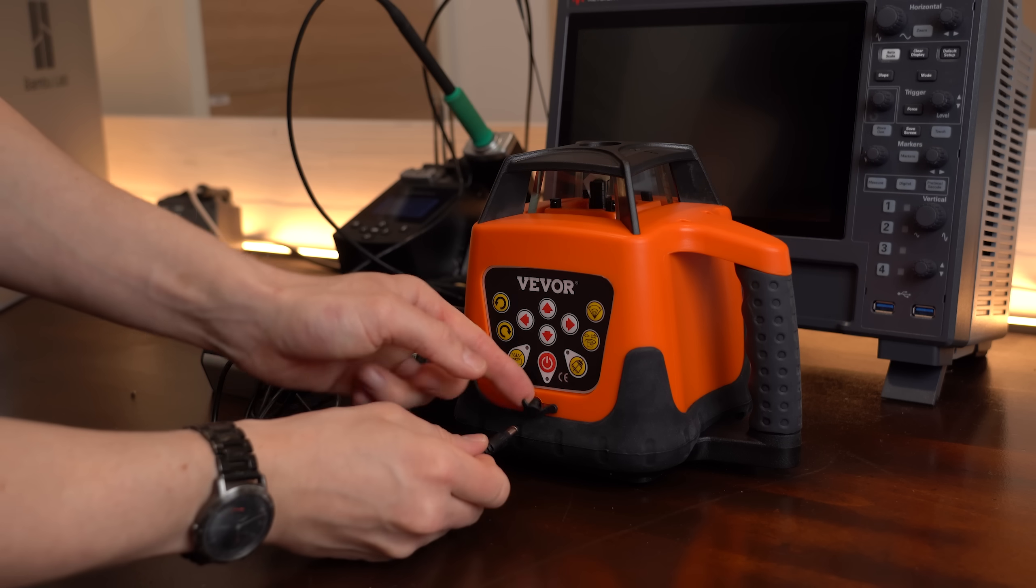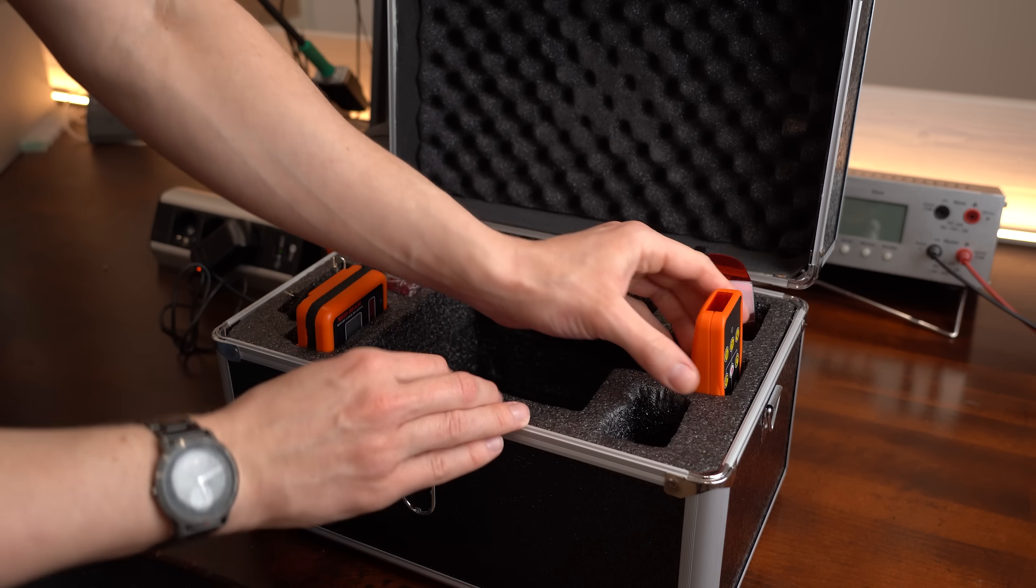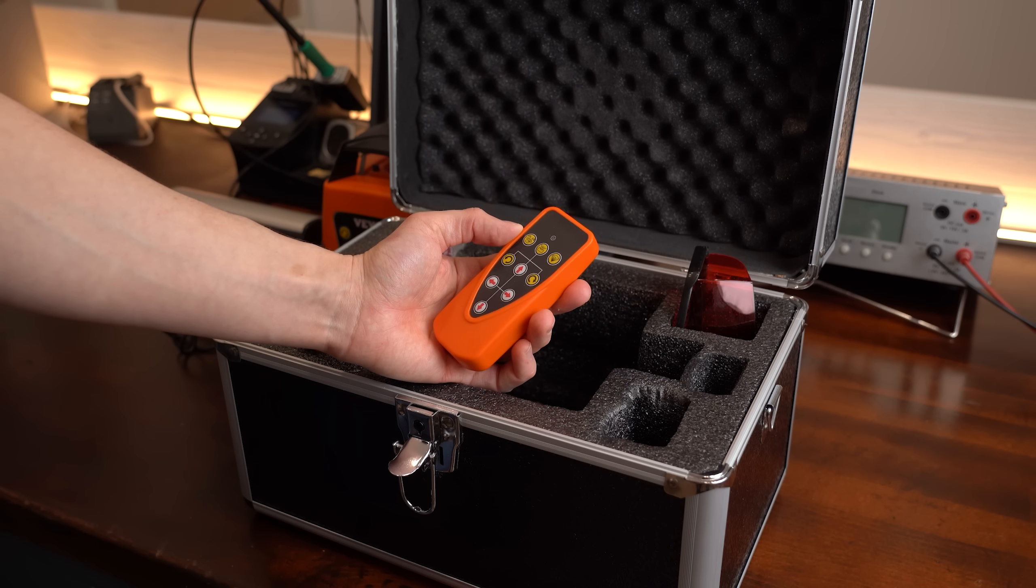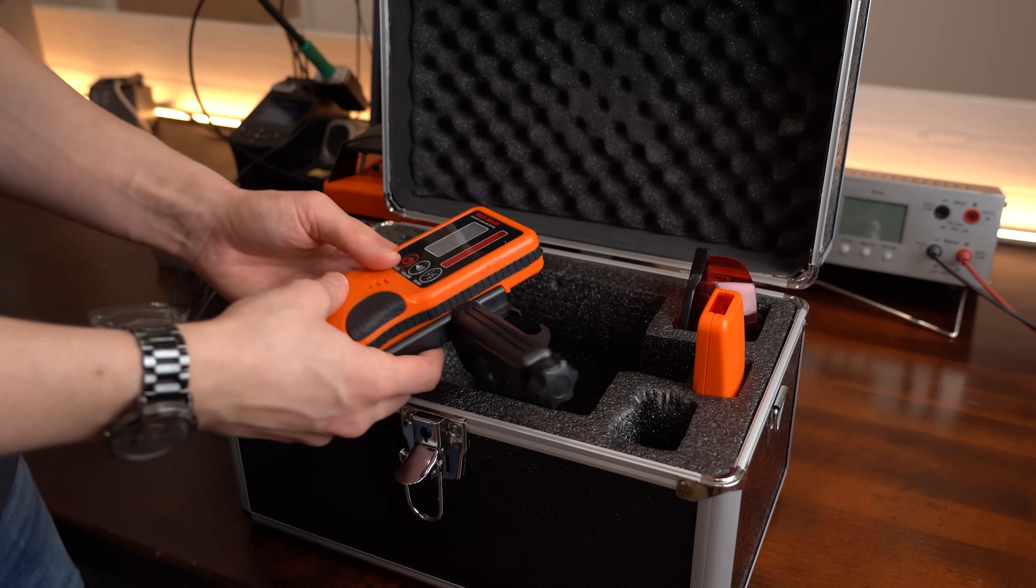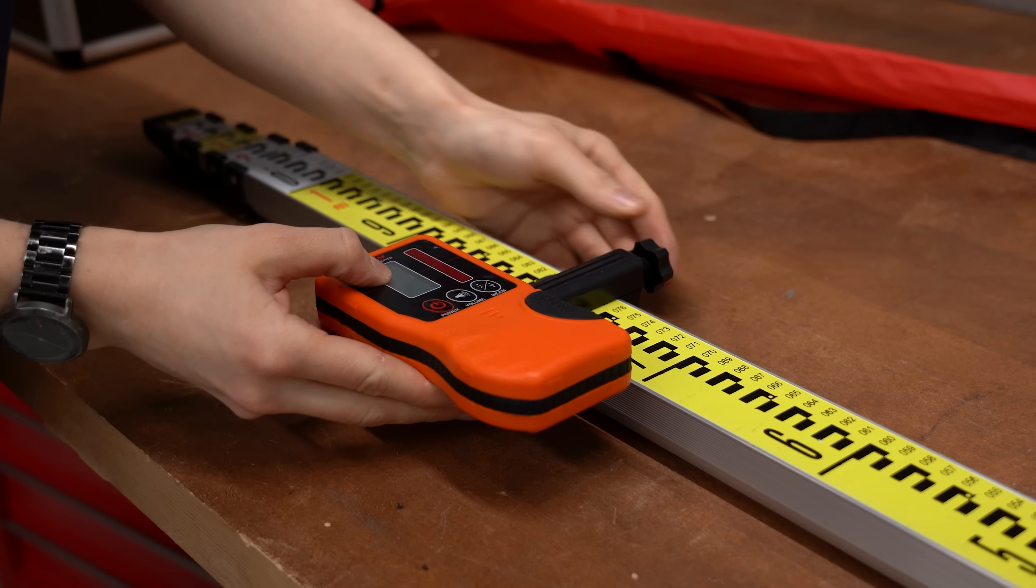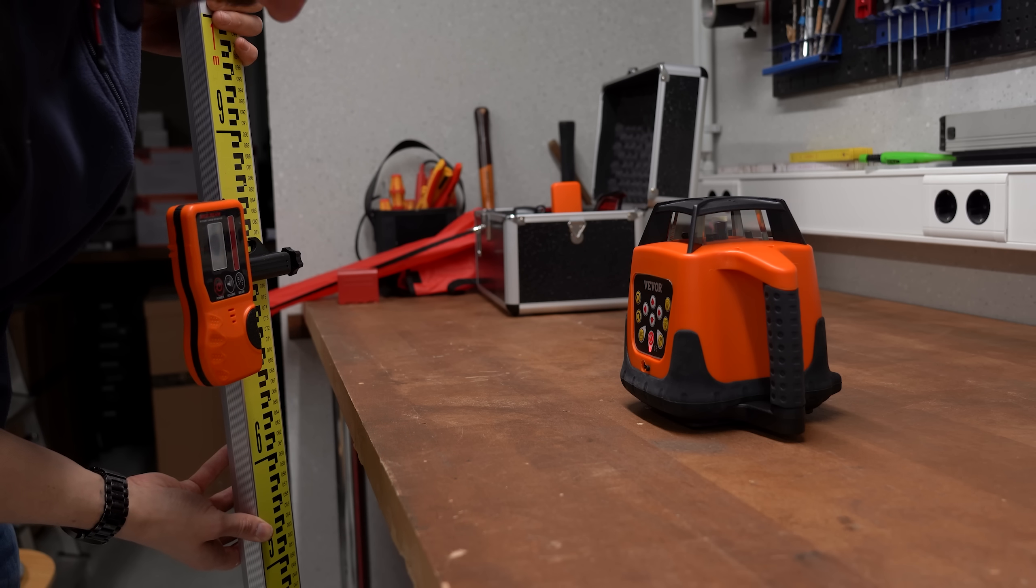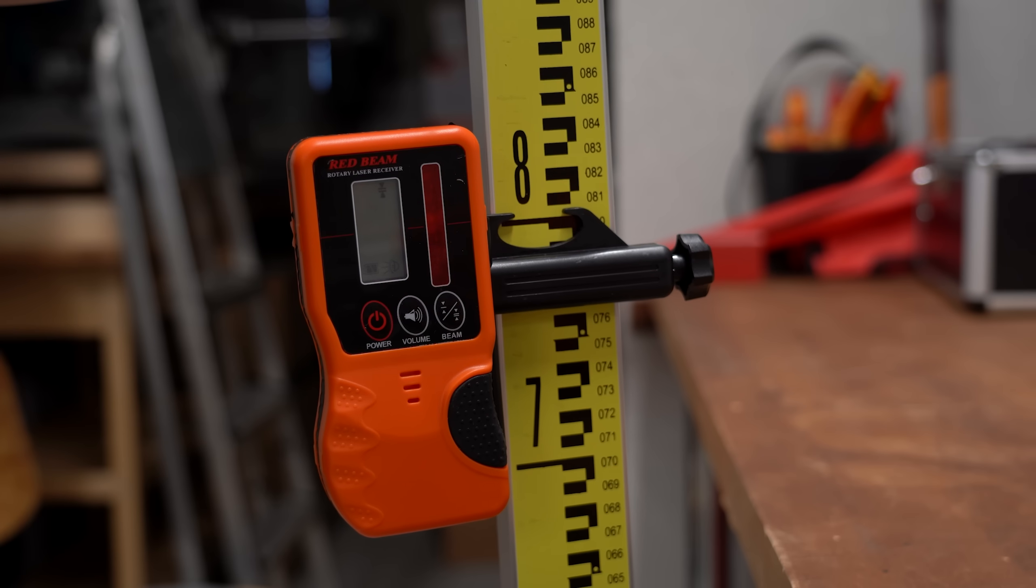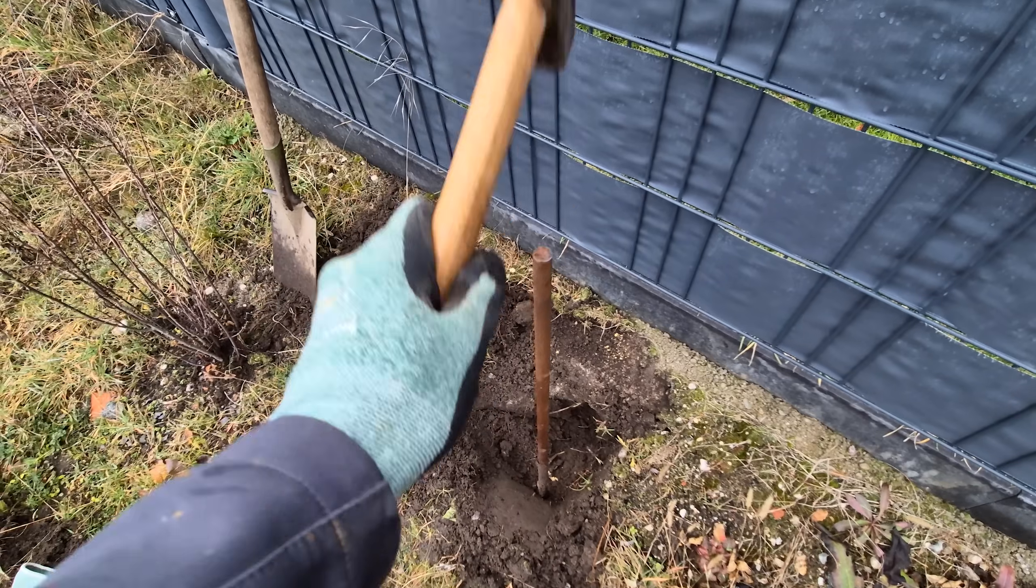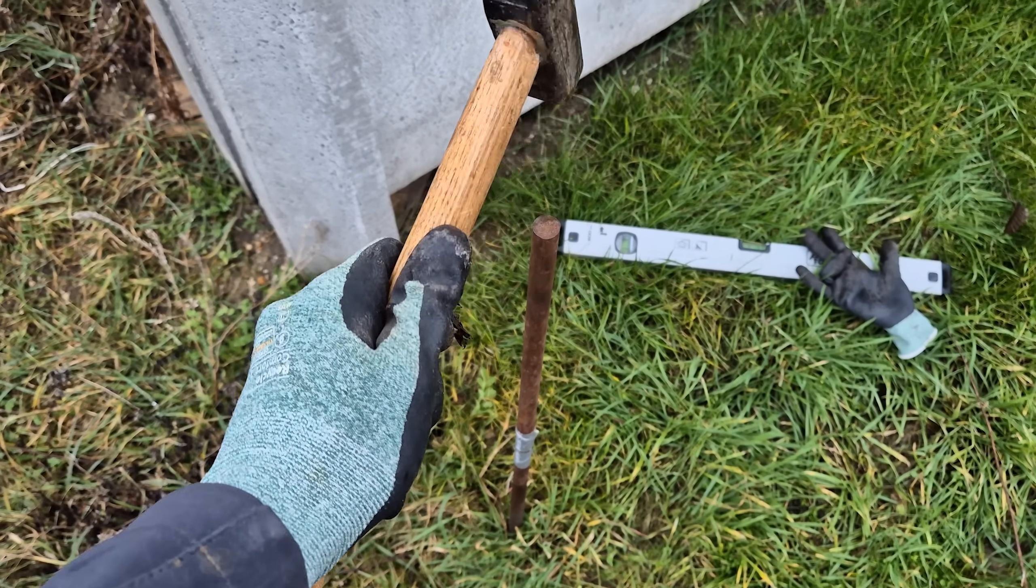And I gotta say that with the given manual it was super simple to understand how to use it. Before doing that outside though I charged it up with the given charger while having a look at the remaining given stuff which was not that important I think except for the laser receiver. By attaching that to the ruler from before this thing basically beeps and shows you how to position it so that the laser beam perfectly hits it in the middle.